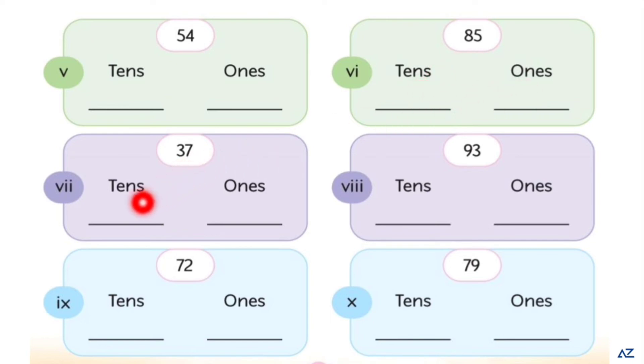37, write number 3 here and number 7 here. This is number 93. Write here number 9 and write here number 3.